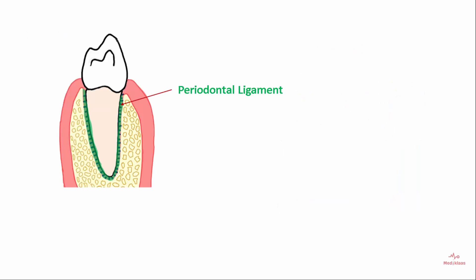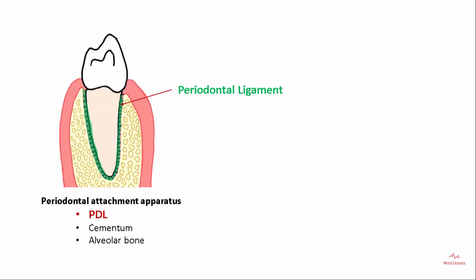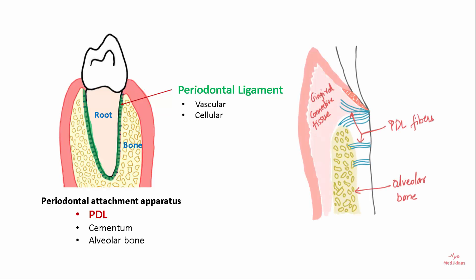The periodontal ligament is part of the periodontal attachment apparatus and connects the tooth root to the alveolar bone. It is a vascular and cellular connective tissue, continuous with the connective tissue of the gingiva and the marrow spaces of the alveolar bone.